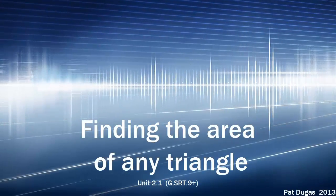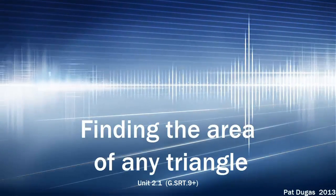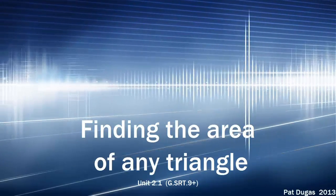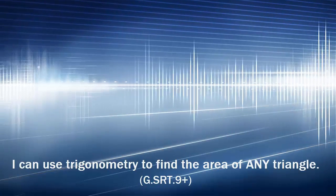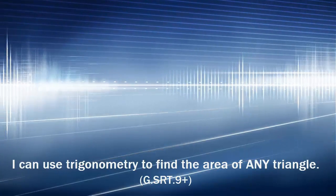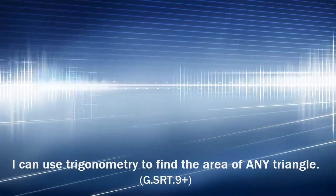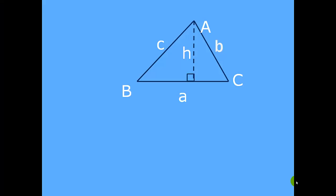We're going to explore one application of trigonometry, which is the ability to find the area of any triangle using only a limited set of information. So let's take a triangle ABC, where the vertices are at capital A, B, and C, and the sides are little a, little b, and little c.